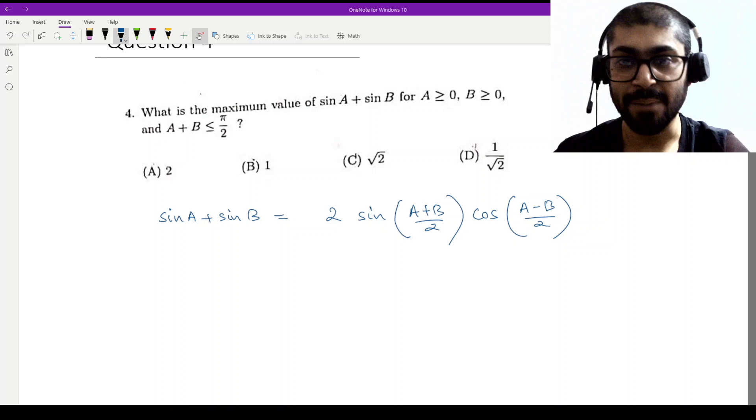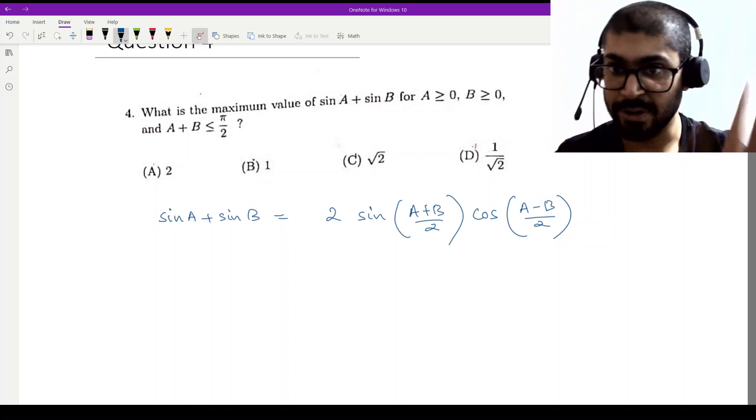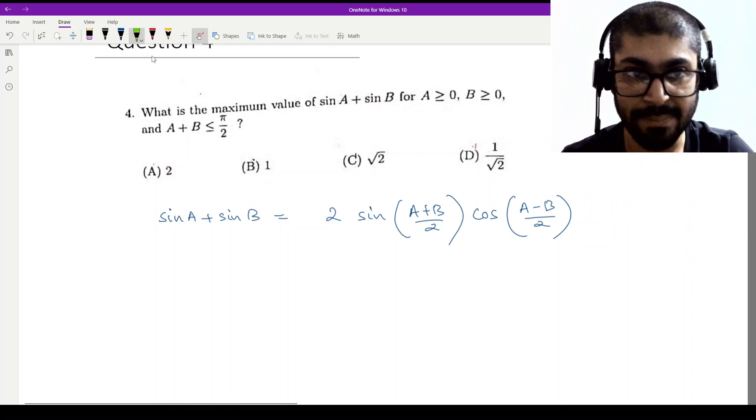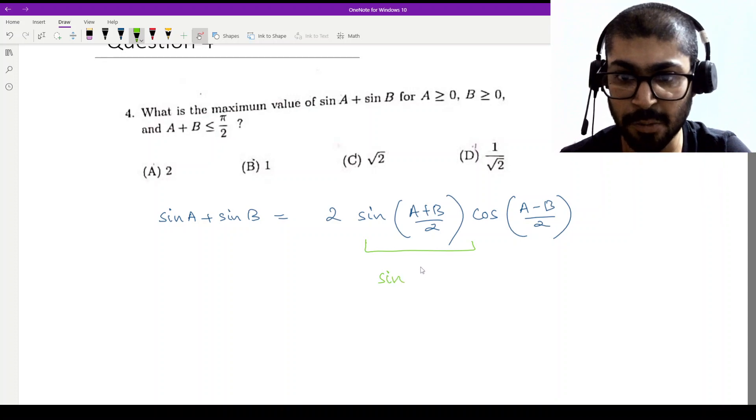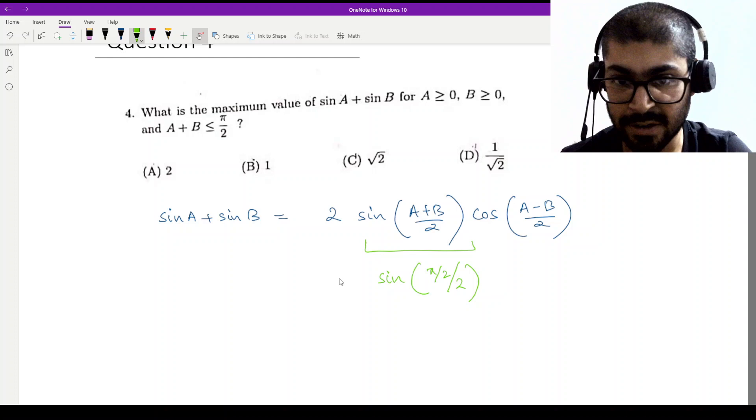This means that we will give A plus B maximum value, so the value of sin is greater. So this particular portion will have maximum value. We will replace here A plus B equal to pi by 2. So this means sin (pi by 2 by 2) into 2.